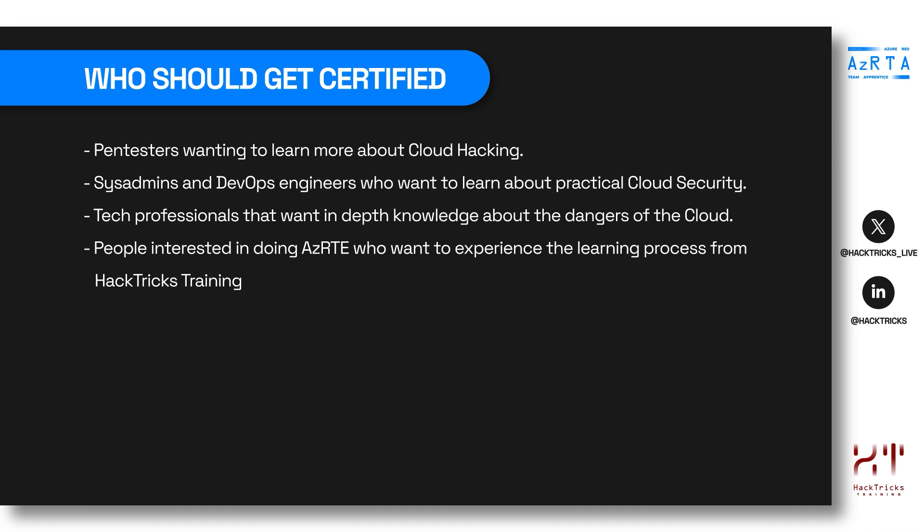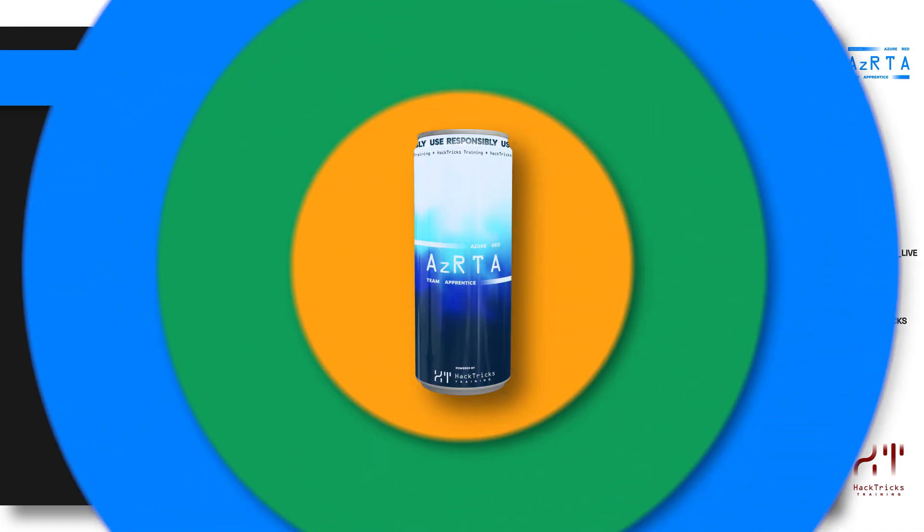If you don't know whether you'll be interested in the expert version, you can always start with the apprentice version and later do the expert one, receiving a small discount because you have already completed the apprentice version.